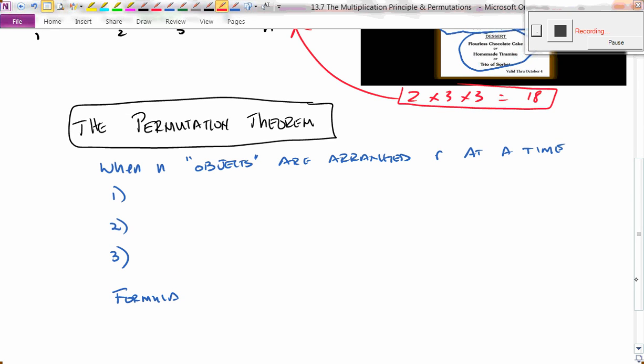The other thing we talked about is the permutation theorem. The permutation theorem says when you have n objects arranged r at a time, a couple of things have to be true. First, the objects are distinct. That means that they are all different. There's no repeating. And three, the most important is that the order is very important.